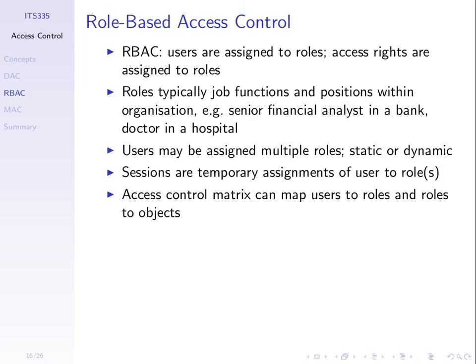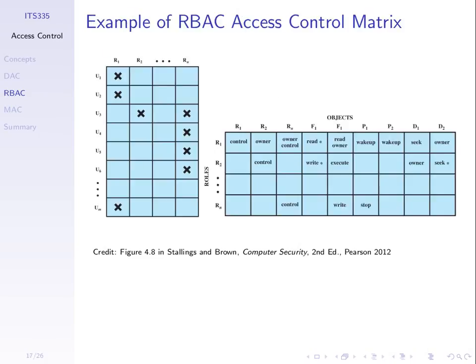To implement role-based access control, we have two matrices or data structures: one mapping users to roles, and one mapping roles to objects with access rights. The first matrix has columns as roles and rows as users — some users may take multiple roles. The access rights matrix has rows as roles and columns as objects. Whoever is in role 1 has these permissions on the objects in the columns. Our system must keep track of this mapping.